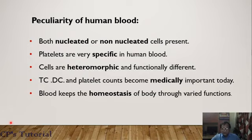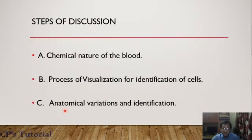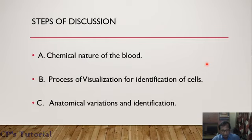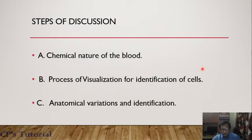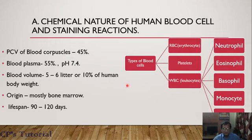We have an interest in identifying particular cells, so I want to have a step-by-step discussion. First, I want to know the chemical characters of those cells which can react with my staining capacity. Second, I want to visualize all cells for identification. Third, the anatomical variations will be determined and observed for proper identification. So in the first point, I have to find out the chemical nature of the blood cells.